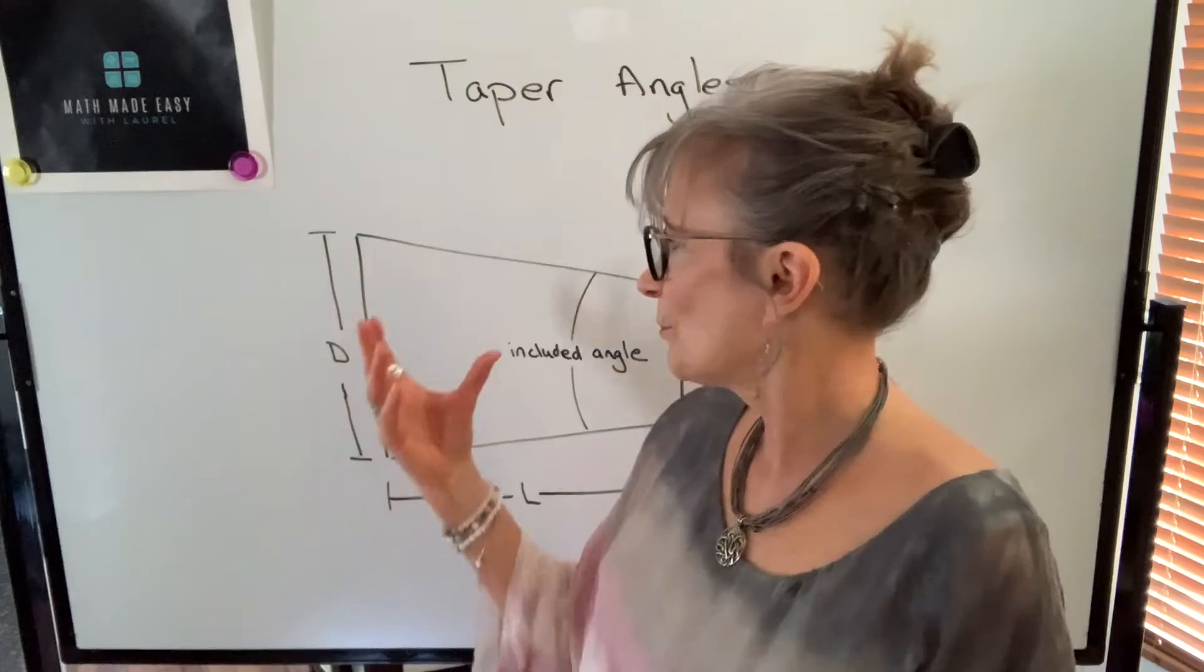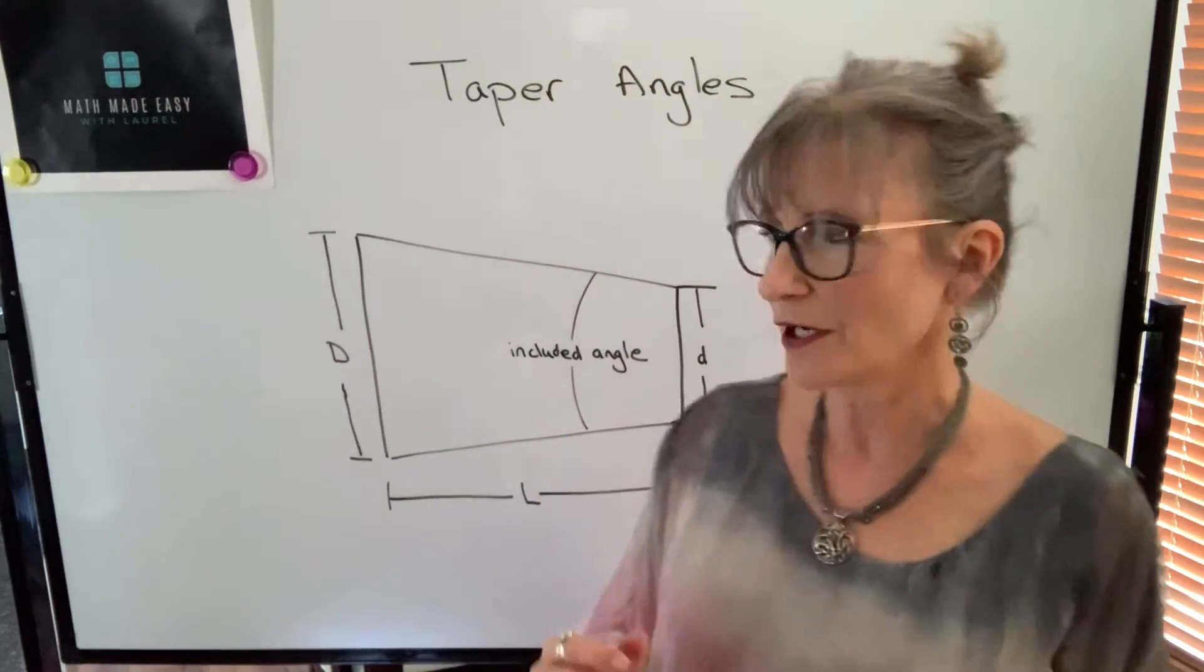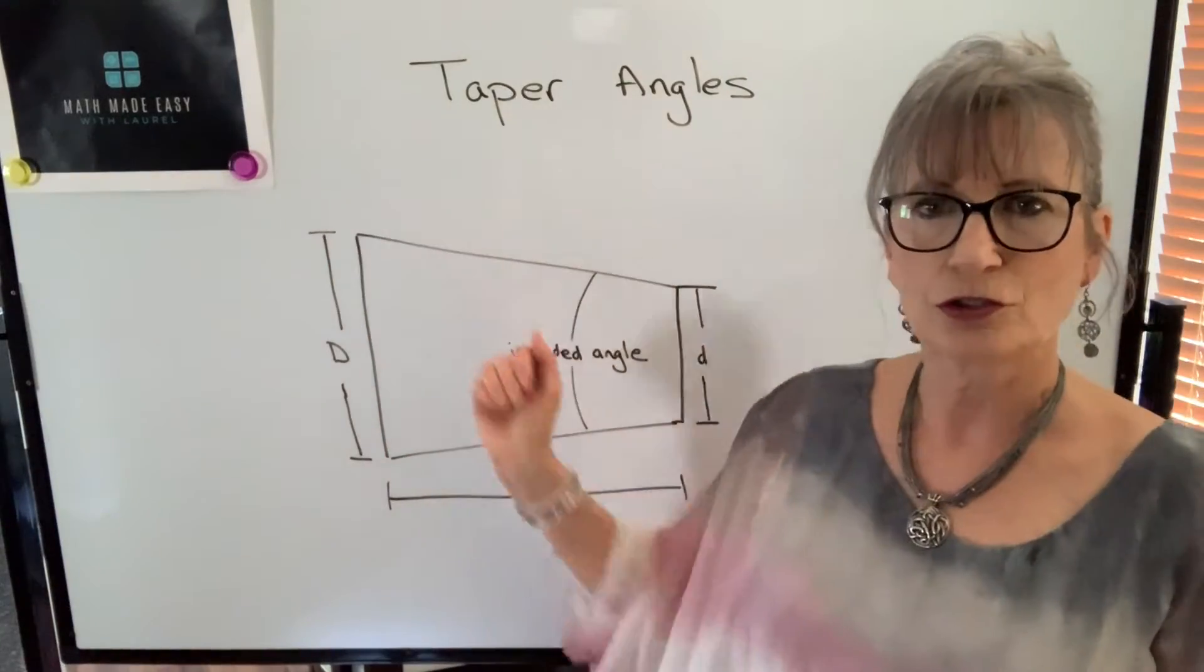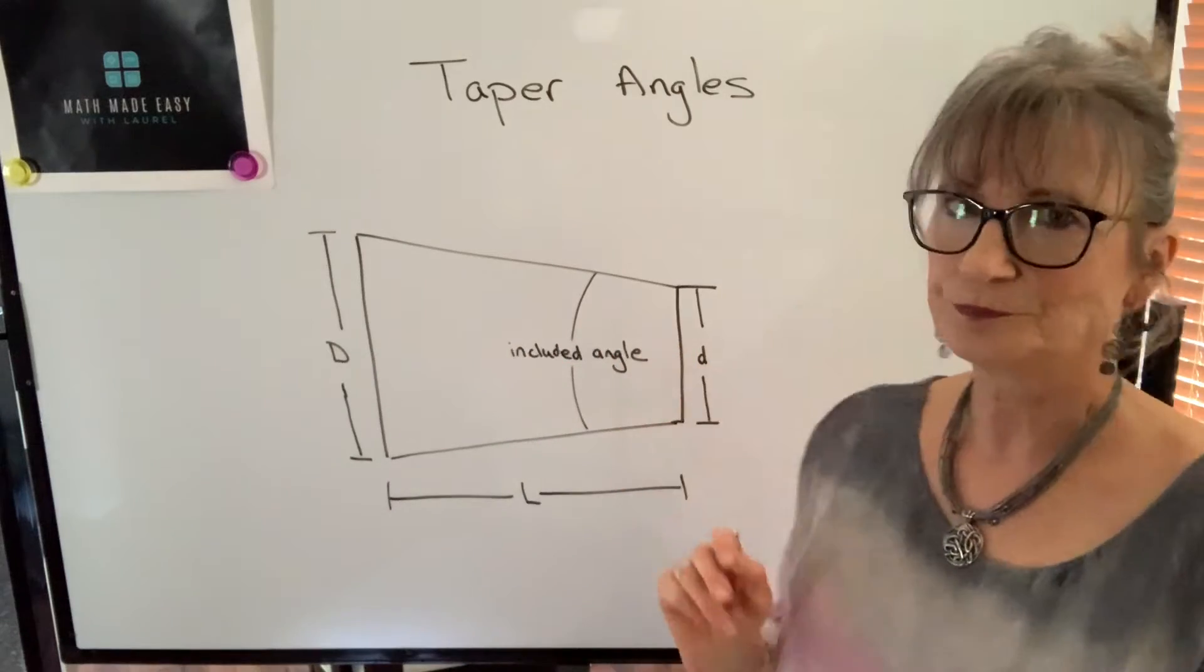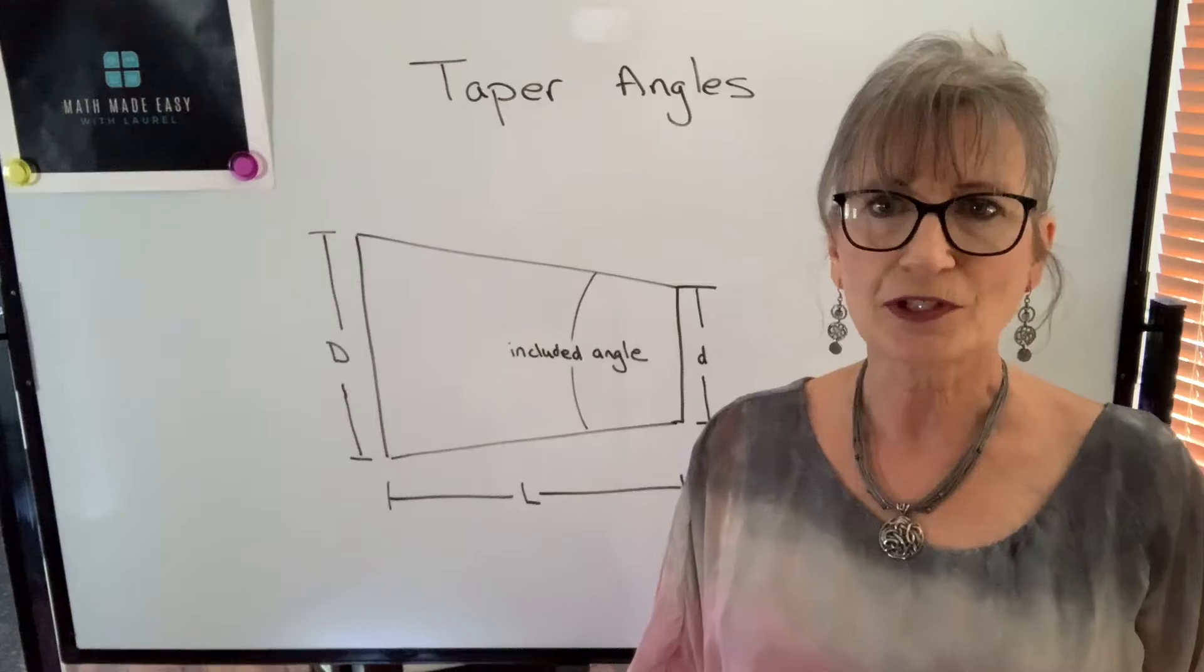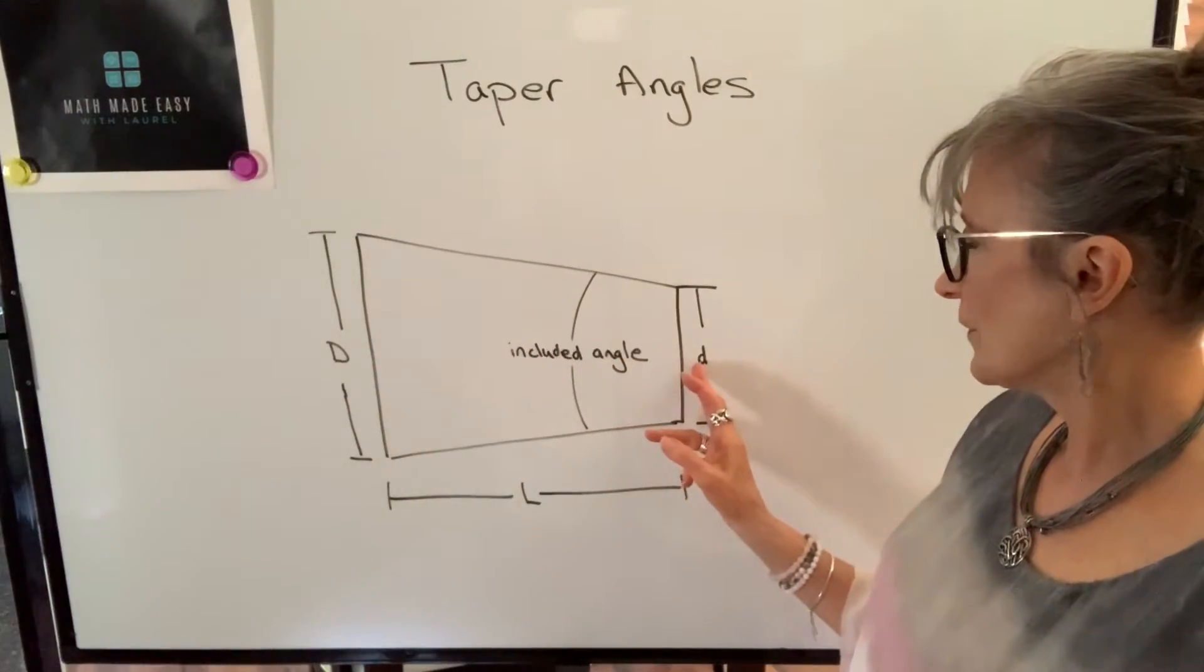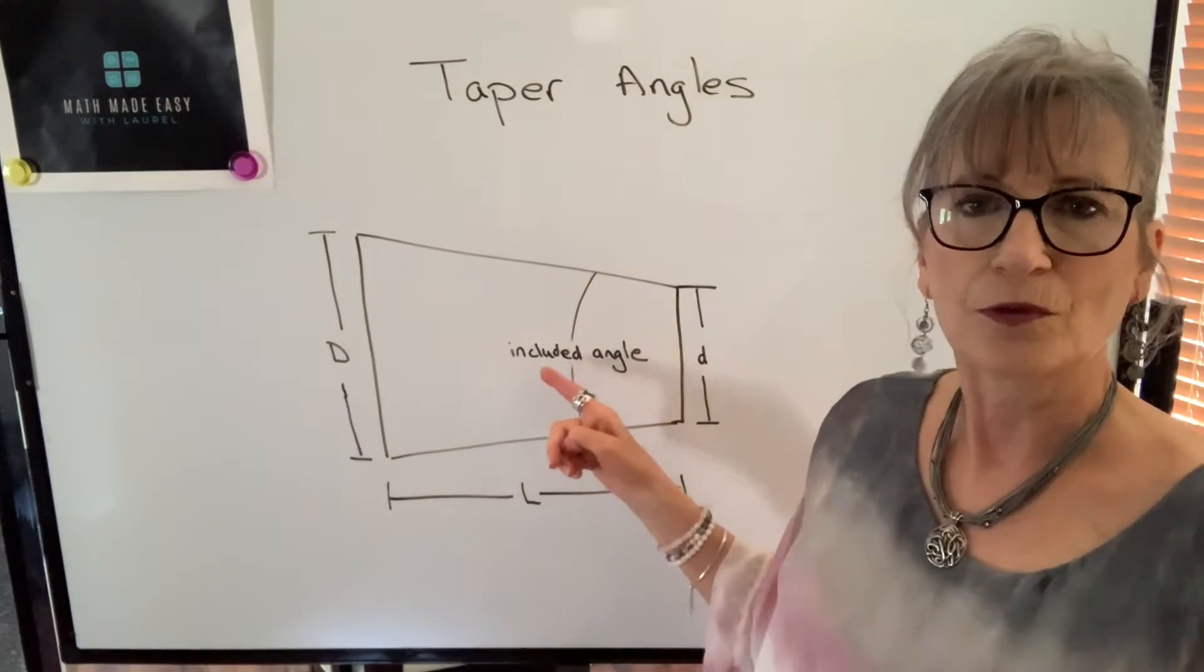So if we were to take a taper and slice it in the middle and get a cross-sectional area of it we would get this shape here, this two-dimensional shape called a trapezoid. Four sides, two sides are parallel and there's four different pieces of information that are relevant about this taper. There's the large diameter of the taper, the small diameter, the length of the taper and what's called the taper angle or the included angle.